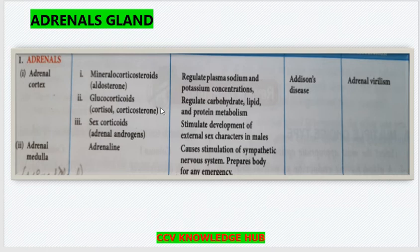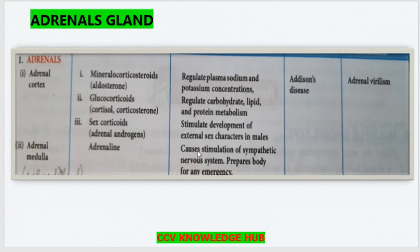Glucocorticoids like cortisol and cortisone regulate carbohydrate, lipid and protein metabolism. Sexcorticoids secrete adrenal androgens, which are mainly responsible for the development of external sexual characters in males. Coming to the adrenal medulla, it secretes adrenaline, which causes stimulation of the sympathetic nervous system — the fight and flight hormone.